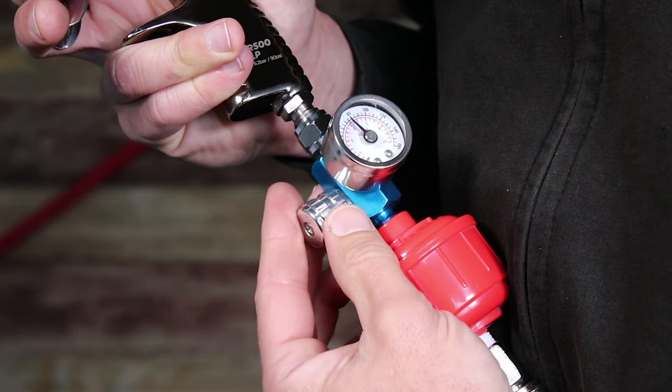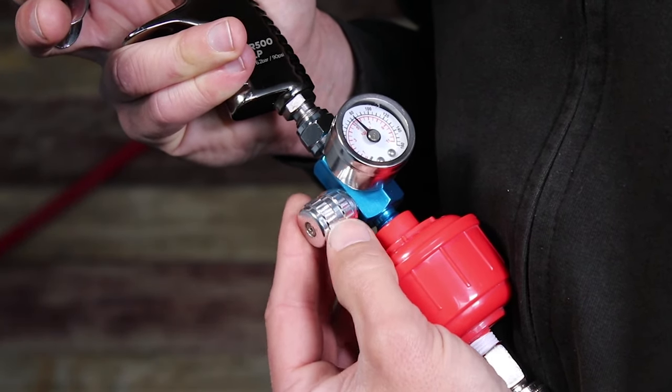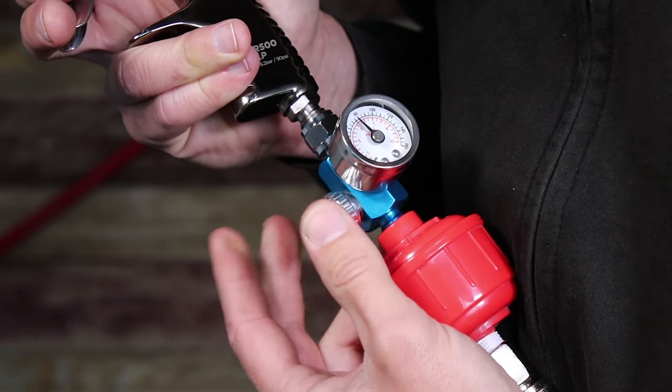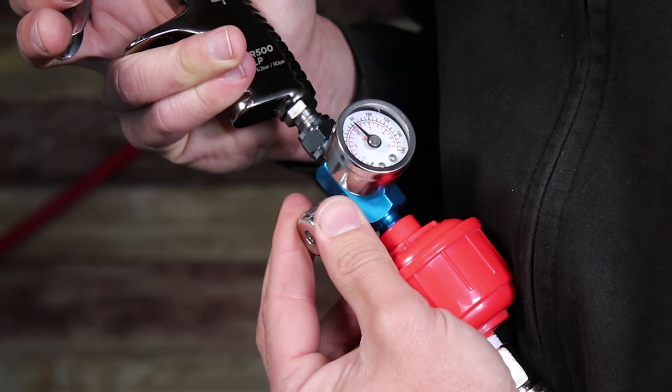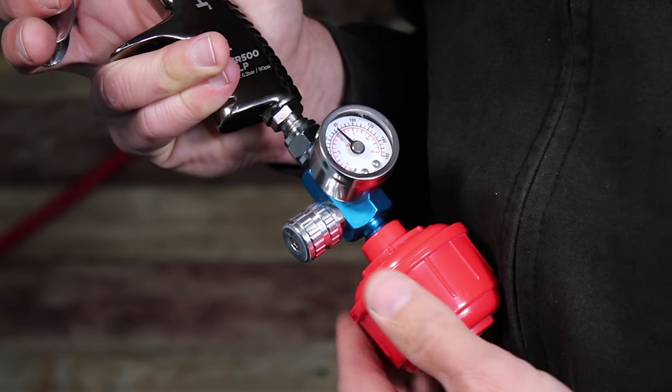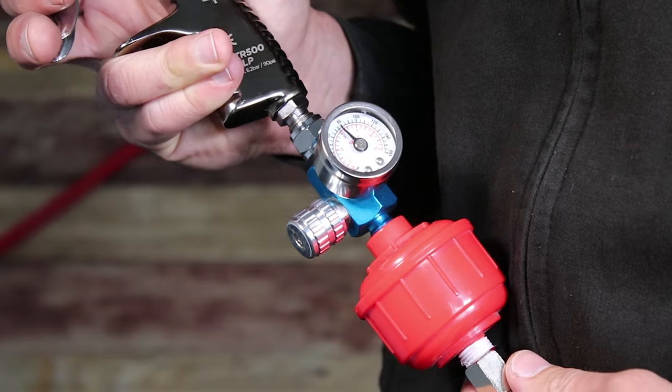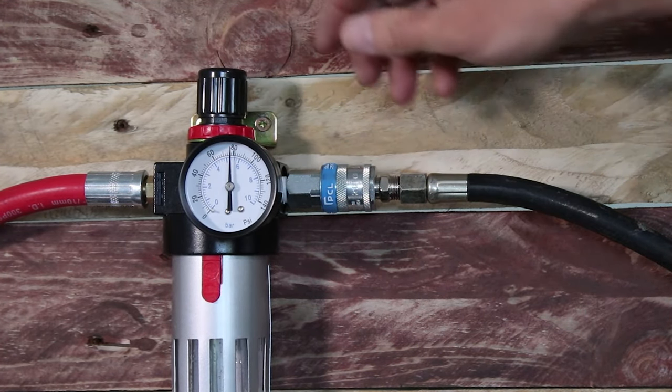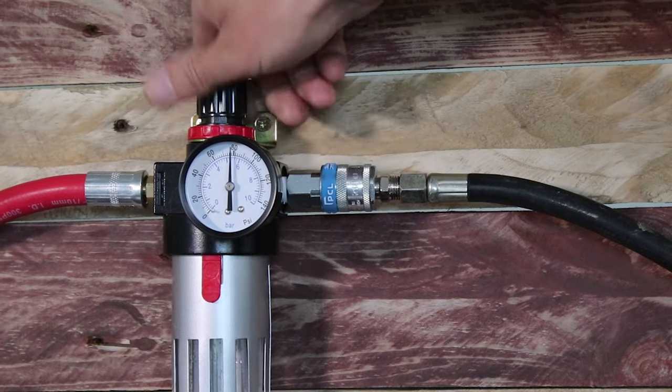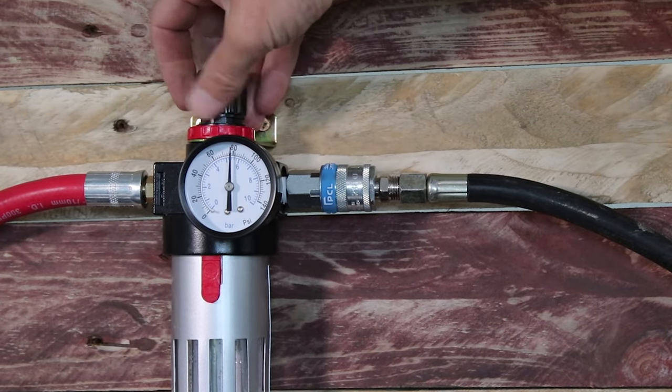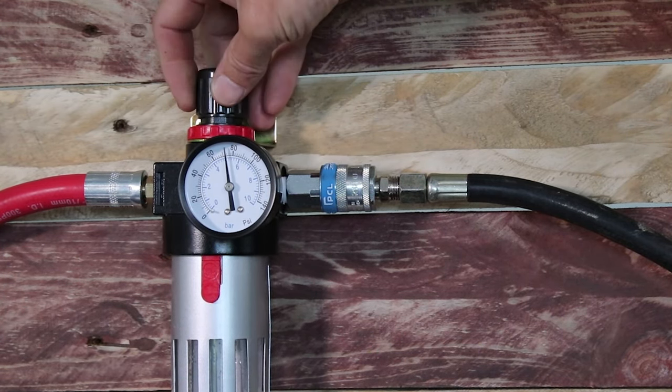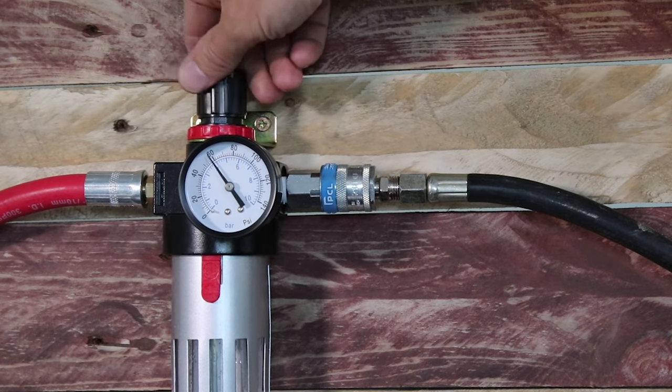The next step will be to open the mini gun regulator completely to allow maximum flow. In this instance we will turn the adjuster anti-clockwise all the way until it stops. We are adjusting the pressure on a wall mounted regulator in this instance, but the same can be achieved on the regulator fitted to the air compressor if you do not have a wall mounted unit.